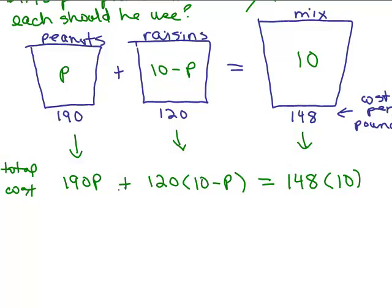Once we have the equation, we're just solving an equation with one variable. So, we have 190P plus. Now, I need to do the distributive property here. So, I have 120 times 10. That is 1200, right? Minus 120 times P. And on the other side, I have 148 times 10. So, that's 1480.